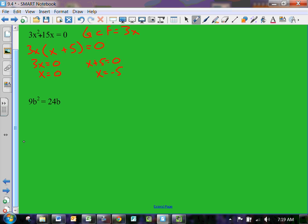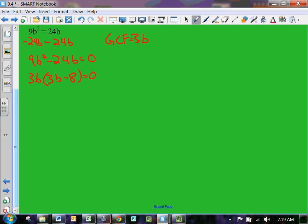This one's a little more tricky. First thing we have to do is make sure it equals zero, so we're just going to subtract 24b from both sides. So we now have 9b squared minus 24b equals zero. And our GCF for this one is going to be 3b. So pulling that 3b out, we have 3b because 3b times 3b is 9b squared, minus 8, and equals zero. So we know that either 3b has to equal zero, or 3b minus 8 has to equal zero. On the left side, dividing by 3 on both sides, so b equals zero. Or adding 8 on this side, 3b equals 8, dividing by 3, b equals 8 thirds.